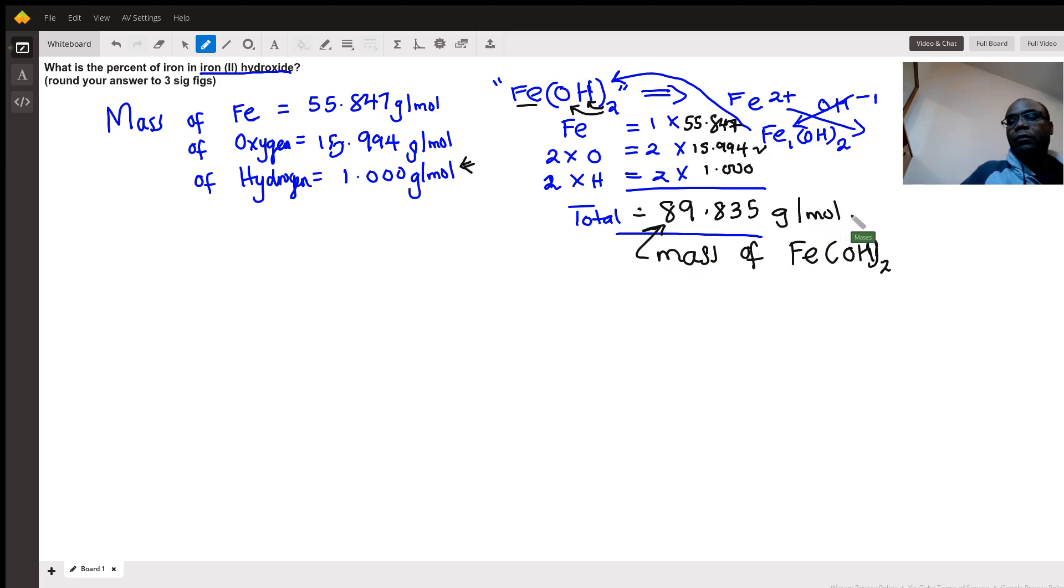Okay, now once we know that, we can come back here and do some calculations. Let's see. So we'll say percent of iron must be equal to the mass of iron divided by the formula mass of iron(II) hydroxide, and then the answer you get, you multiply by 100.